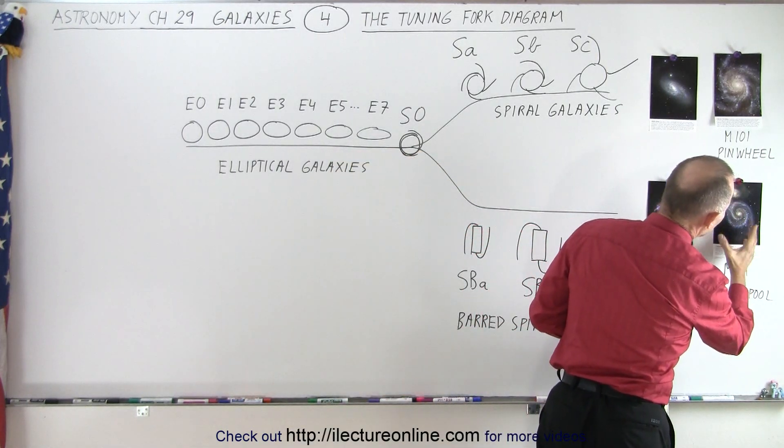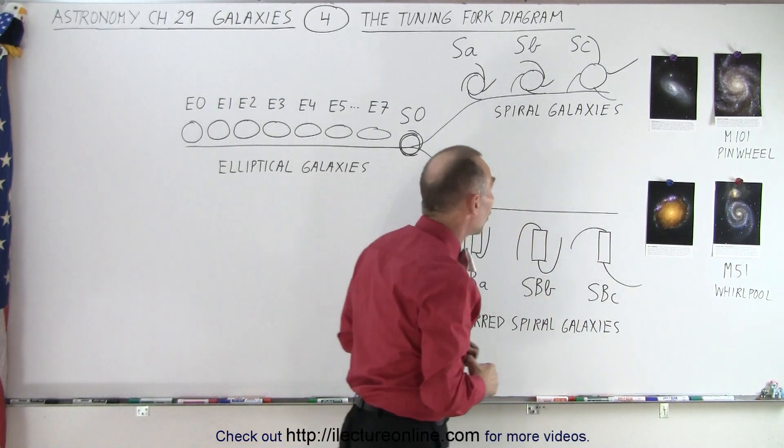Here we have the whirlpool galaxy and you can see again that the arms are not that tightly wound, but they're not really flung far outside, to call the whirlpool galaxy also probably an SB galaxy.